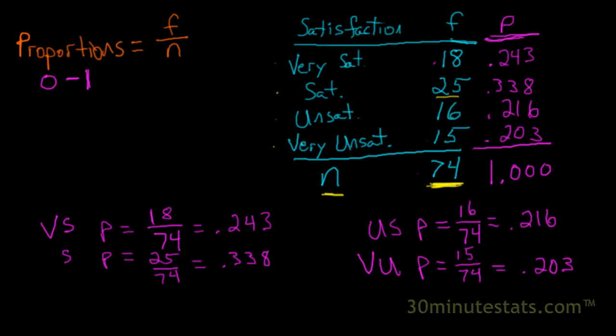Now the proportions are all good, fine and good here. We've calculated them. We know that 0.338 of the sample was satisfied, and that's the largest proportion, which corresponds to the largest frequency in this group as well. But we tend to think not in terms of 0s and 1s, or ranges from 0 to 1. People tend to think better in terms of percentages.